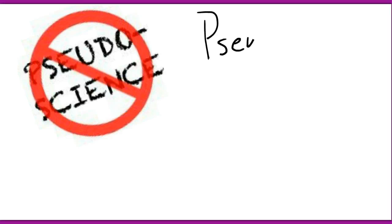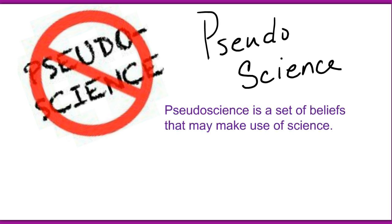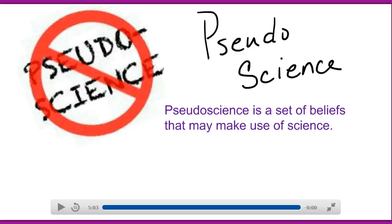Our final term is pseudoscience. Pseudoscience is a set of beliefs that may make use of science. Magic is an example of pseudoscience — there might be some science there, but how much science is really there? The conclusions and predictions of pseudoscience are not based on observation, objective reasoning, or scientific evidence. Science is based on empirical evidence and well-reasoned interpretation of data. Pseudoscience, on the other hand, may make use of scientific data, but the conclusions are based on subjective reasoning, faulty reasoning, or faulty beliefs — not on careful examination of the evidence.